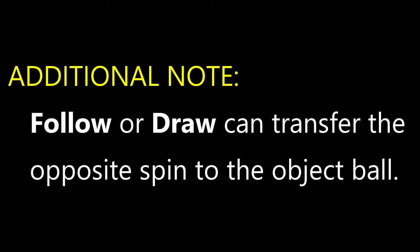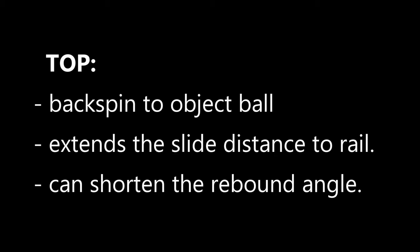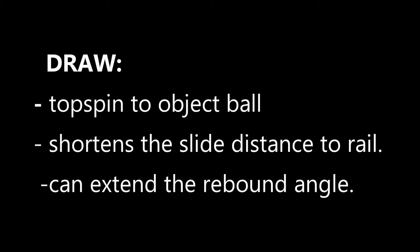Now a quick note I forgot to mention: follow and draw can transfer spin to the object ball and alter the rail action for a given speed, kind of like rail distance — something to consider when trying to get shape from a bank shot. Theoretically, top will transfer backspin to the object ball and shorten the rebound angle, but in live play I find this quite insignificant and don't adjust for it. Draw, however, does produce notable topspin on the ball and can make a medium speed shot rebound with slow speed rail action. Top and draw have much more dramatic effects on kick shots.